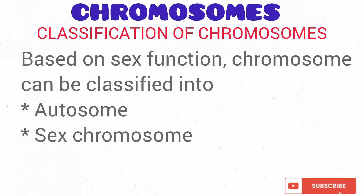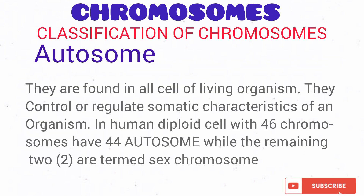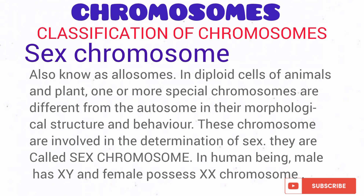The last classification of chromosomes is based on function, and chromosomes are classified into autosomes and sex chromosomes. The autosomes are chromosomes that are not involved in sex determination. In humans, there are 22 pairs or 44 autosomes. The sex chromosomes in humans are one pair or two chromosomes — in males it is XY, while in females it is XX.